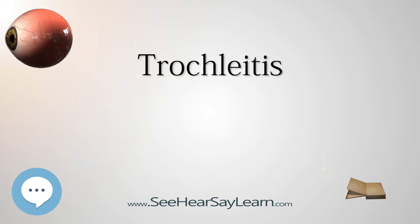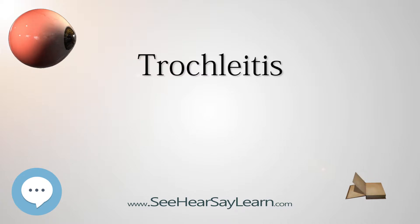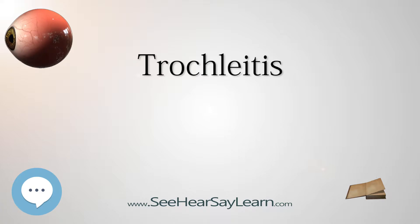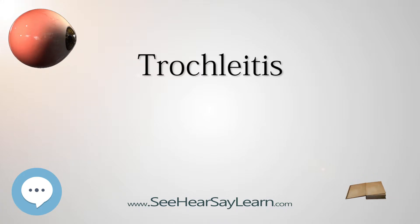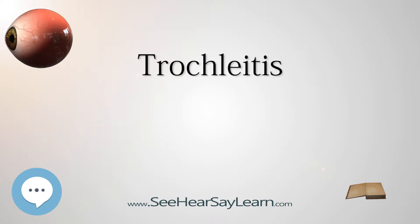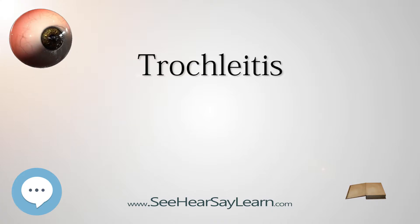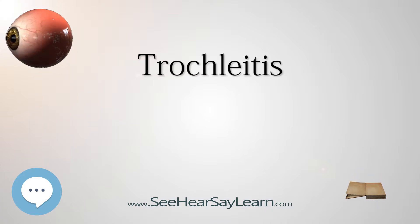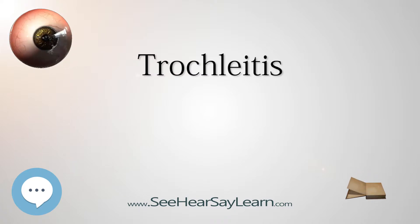Patients with trochlitis typically experience a dull, fluctuating aching over the trochlear region developing over a few days. Some may also feel occasional sharp pains punctuating the ache. In patients with migraines, trochlitis may occur simultaneously with headache. Presentation is usually unilateral with palpable swelling over the affected area, supranasal to the eye. The trochlear region is extremely tender to touch.